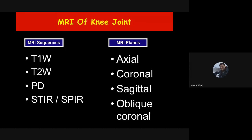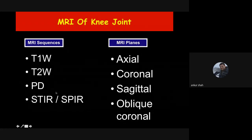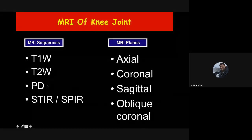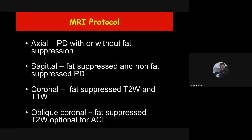Proton density (PD) is a sequence that is a combination of T1 and T2, with short TE and long TR, and is the main sequence for musculoskeletal imaging. Every center has its own MR protocol. Most important is to have some axial sequences — usually proton density with fat suppression in axial, two sagittal sequences (one fat suppressed PD, one non-fat suppressed PD), two coronal sequences (one fat suppressed T2, one non-fat suppressed T1), and also oblique coronal for the anterior cruciate ligament.